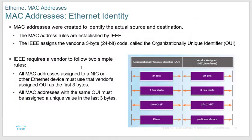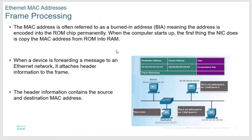Remember: the first six digits of your MAC address are the OUI — the Organizational Unique Identifier. The first 24 bits are the OUI and the second 24 bits the vendor assigns, typically as a serial number. The MAC address is 48 bits total and made up of 12 nibbles.